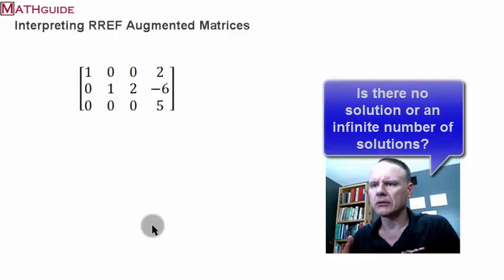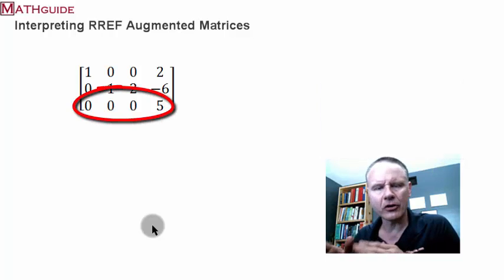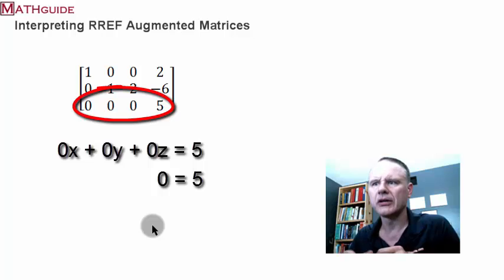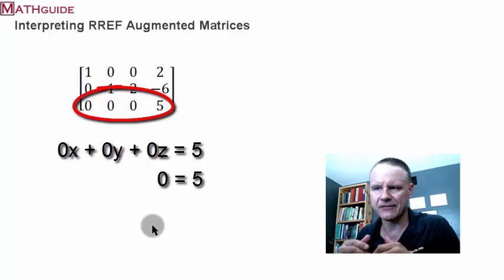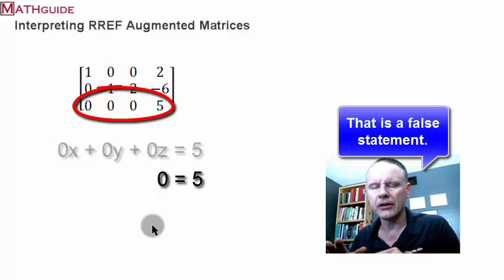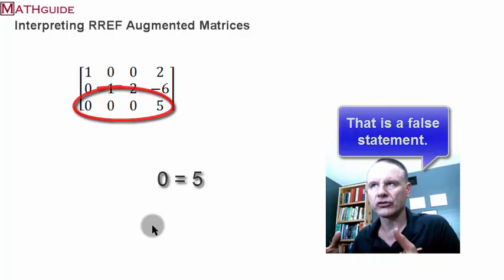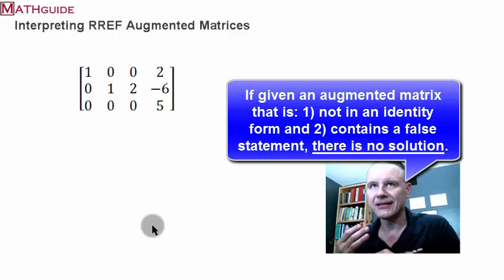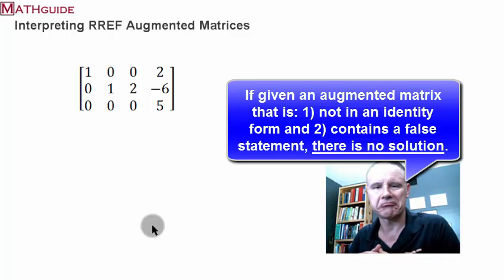Now which is it — no solutions or an infinite number of solutions? It's really easy to tell. Look at the last row. If you interpret what the last row means, it provides you with a hint. That's 0x plus 0y plus 0z equals 5 — in other words, that's 0 equals 5. The last time I checked, 0 is not equal to 5. So if you're ever given an equation that doesn't make any sense, that's a false statement. Therefore, if you're given a non-identity matrix with a false statement in it, there's no solution. This one has no solution.